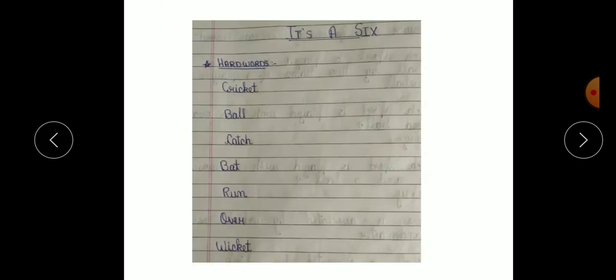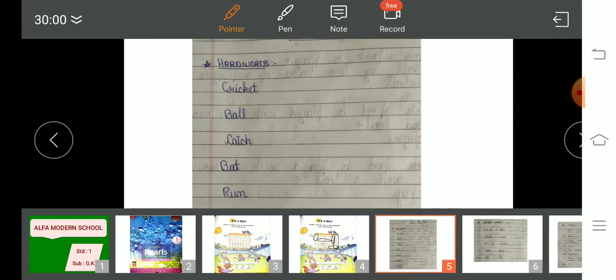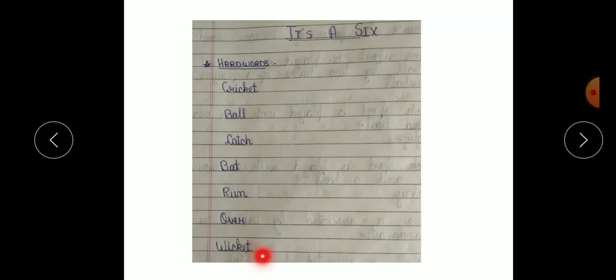Now next, hard words. C-R-I-C-K-E-T, cricket. B-A-L-L, ball. C-A-T-C-H, catch. B-A-T, bat. R-U-N, run. O-V-E-R, over. W-I-C-K-E-T, wicket. So aap ko ye hard words aap ki classwork notebook me one time and homework notebook me two time write karne hai.